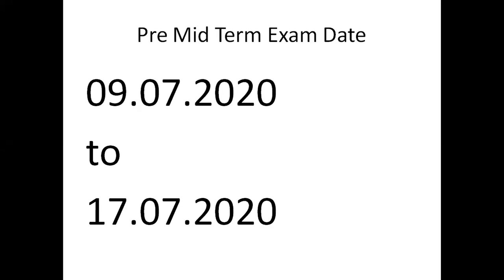This is a tentative date. These dates were created in February or March this year, so due to lockdown, these dates might change. But for now we will consider that our exams are going to happen on these dates. Please write down: 9th July to 17th July. That is the first pre-midterm exam. Write it on your book — you should have all the information.